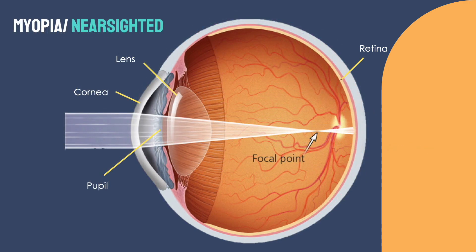Myopia, also known as nearsightedness, occurs when the cornea of your eye is too curved or the eyeball is too long. Light that enters the eye is bent too intensely and cannot reach the retina. Thus, faraway objects tend to focus in front of the retina instead of on it.